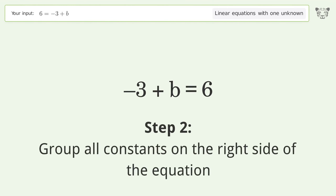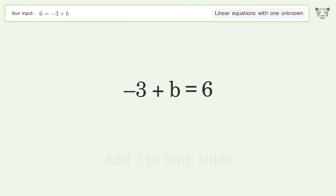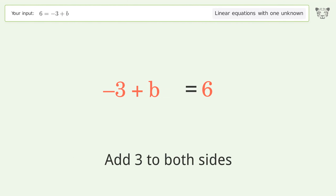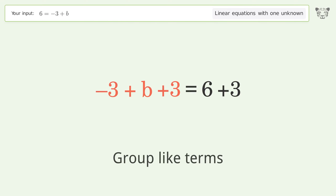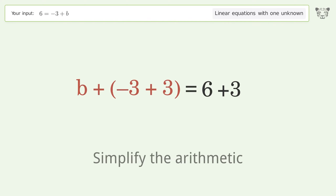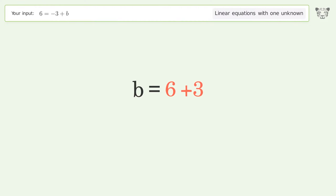Group all constants on the right side of the equation — add 3 to both sides. Group like terms, then simplify the arithmetic. And so the final result is b equals 9.